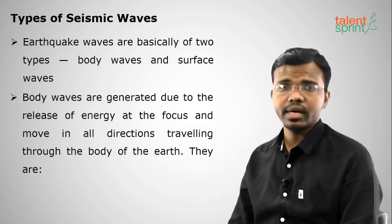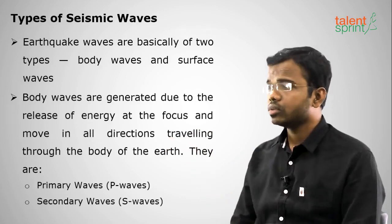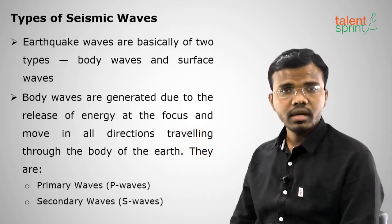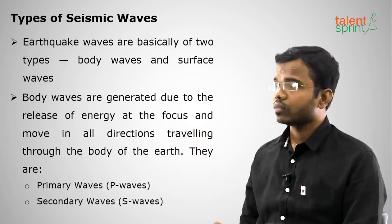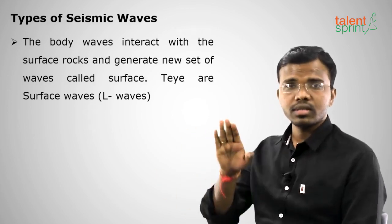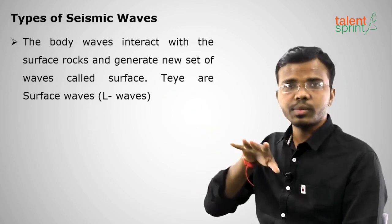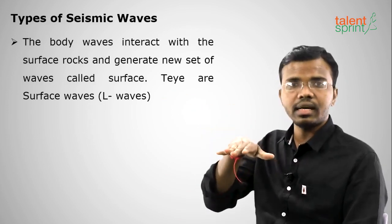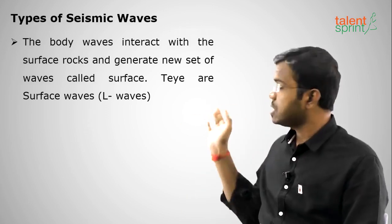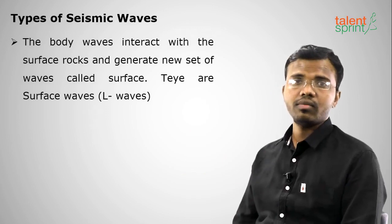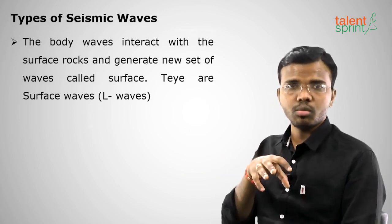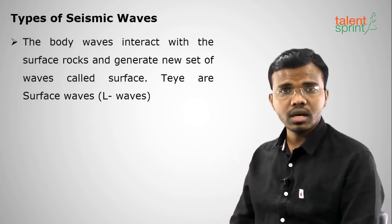Body waves travel in all directions. There are two types of body waves: primary waves (P waves) and secondary waves (S waves). Body waves also interact with the surface to produce surface waves on the earth's crust where we are standing — we can feel them. Surface waves are also called L waves. So: P waves are primary, S waves are secondary — these two are body waves — and surface waves are L waves.